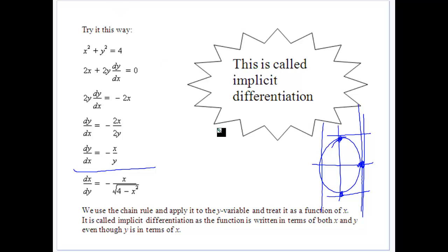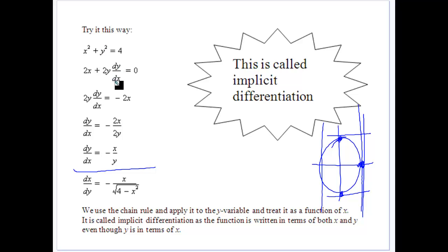So is there a better way to do it? Yes — it's called implicit differentiation. We differentiate every term with respect to x. When we differentiate x squared we get 2x, and when we differentiate y squared we apply the chain rule, since y is a function of x. That gives us 2y times dy/dx. Differentiating the constant 4 gives 0, so we rearrange to get dy/dx by itself.